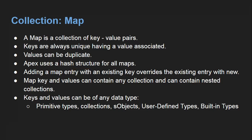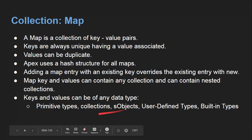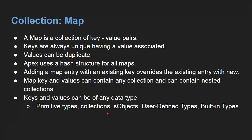Apex uses a hash structure for all maps. Adding a map entry with an existing key overrides the existing entry with the new value. For example, if you have key as one and value as 'test', and for key one you want to assign any other value, the value 'test' will be overridden with the new value. Map keys and values can contain any collection and can contain nested collections as well. Keys and values can be of any data type — primitive, collection (lists, set, map), SObjects, user-defined types, or built-in types.